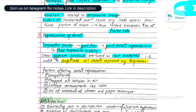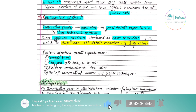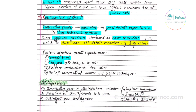Factors affecting detail reproduction include: compatibility of the gypsum product with the impression material; trapped air bubbles in the mix — air bubbles obviously reduce detail reproduction; surface contaminants like saliva on the impression; and use of a mechanical vibrator and proper technique, which improve detail reproduction.